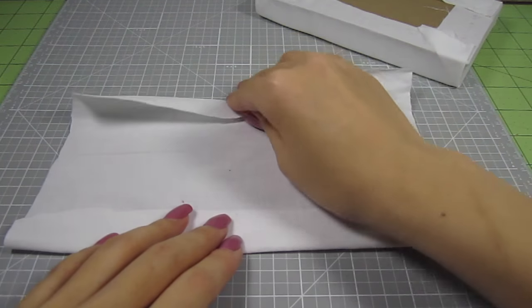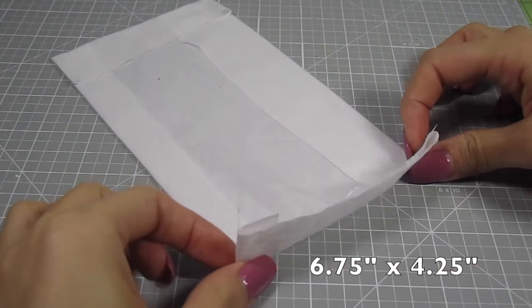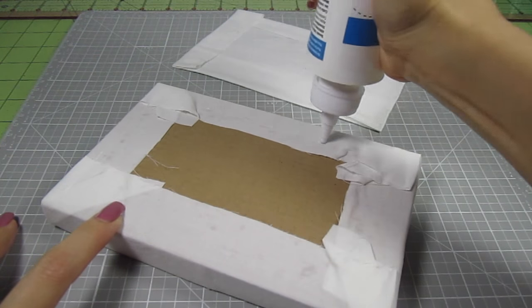To cover the rest of the cardboard, grab another piece of fabric that's 6 inches by 9 inches. Fold and glue in the sides until you have a 6 3⁄4 inch by 4 1⁄4 inch rectangle. With the clean side out, glue it to the back of the mattress.